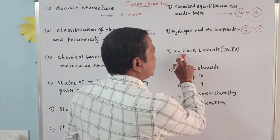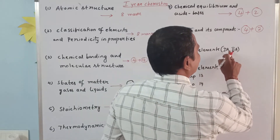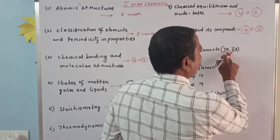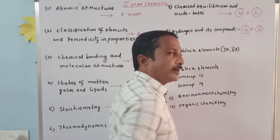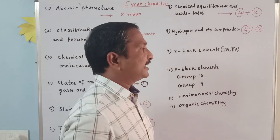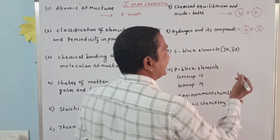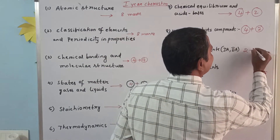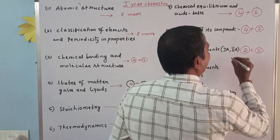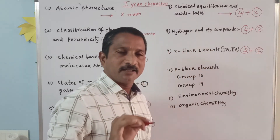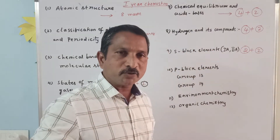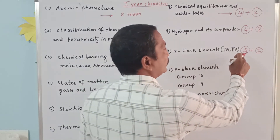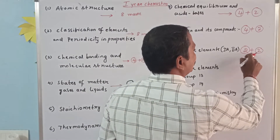Ninth unit: S-block elements — that means Group 1A and Group 2A, alkali metals and alkaline earth metals. The weightage is only four marks, that is two plus two. In S-block, there are no eight-mark questions and no four-mark questions, only two two-mark questions.